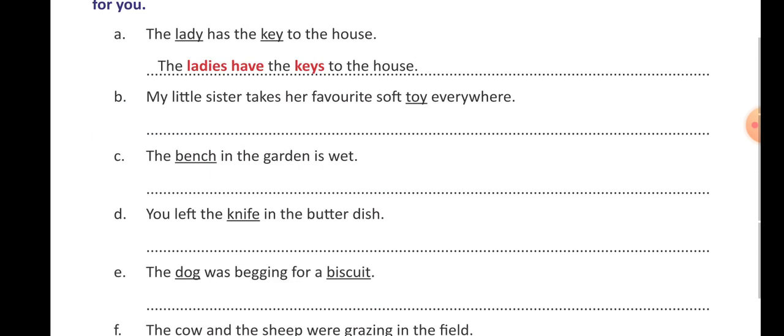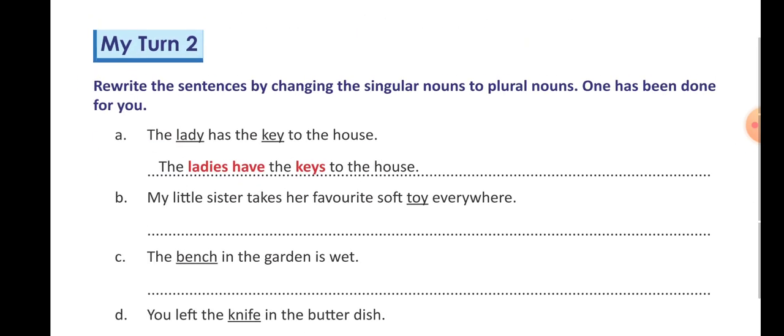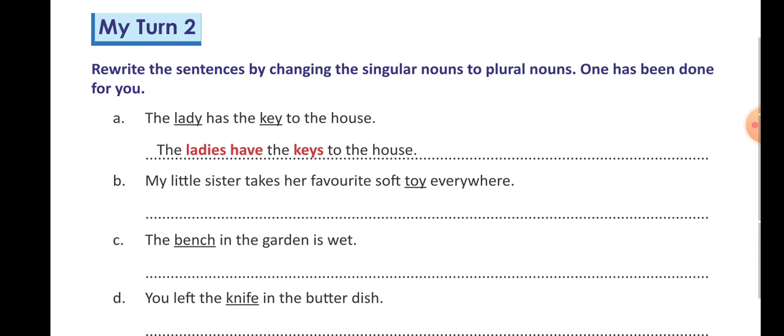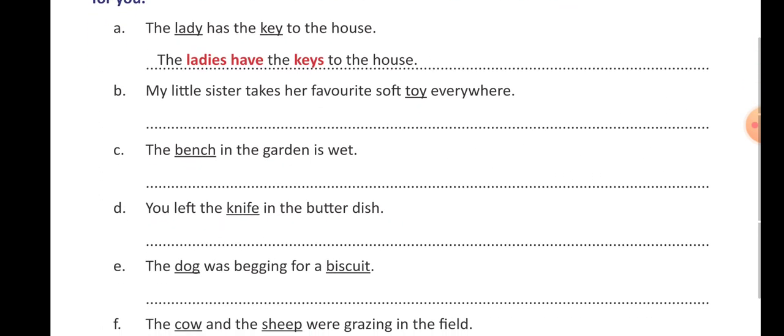And now I am going to tell you the answers of My Turn 2. First has been done for you. P number: my little sister takes her favorite soft toys — T-O-Y-S — everywhere. You will change only the underlined nouns. C number: the benches — B-E-N-C-H-E-S — benches in the garden is wet.